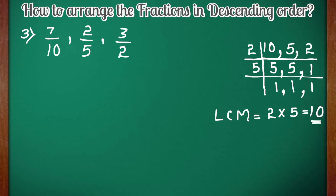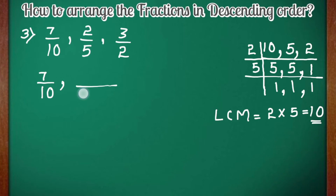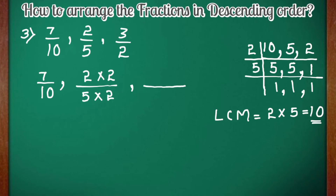Now we have to make all denominators equal to 10. The first fraction already has 10 as the denominator, so we write it as it is. For the next fraction with denominator 5, we multiply both numerator and denominator by 2 to get denominator 10 — so the numerator becomes 2 times 2 equals 4, giving 4 by 10. For the fraction with denominator 2, we multiply both numerator and denominator by 5 — so the numerator 3 times 5 equals 15, giving 15 by 10.